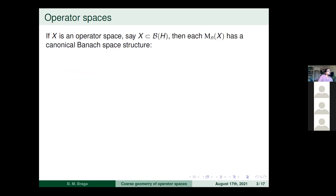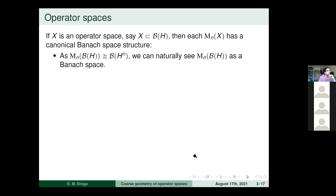If you start with an operator space sitting inside B(H), you want to see each matrix space M_n(X) as a Banach space with a norm. Since X sits inside B(H), you look at H_n = l^2 sum of n copies of H, still a Hilbert space. Since M_n(B(H)) and B(H^n) are algebraically isomorphic, you transfer the operator norm from B(H^n) to M_n(B(H)), and M_n(X) inherits this norm as a subspace.